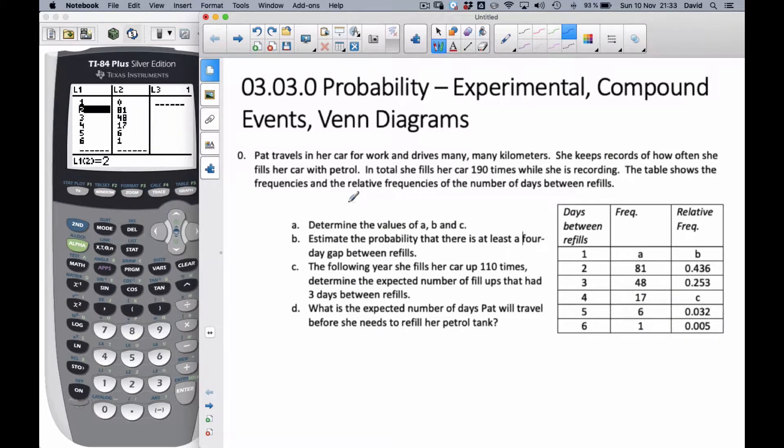Hi, it's Mr. Rops here, and we're going to talk about probability today. This particular problem is going to be about relative frequency and expected value. So Pat travels in her car for work and drives many kilometers. She keeps records of how often she fills her car with petrol. In total, she fills her car 190 times while she's recording this data, and the table shows her frequencies and the relative frequency of the number of days between refills.